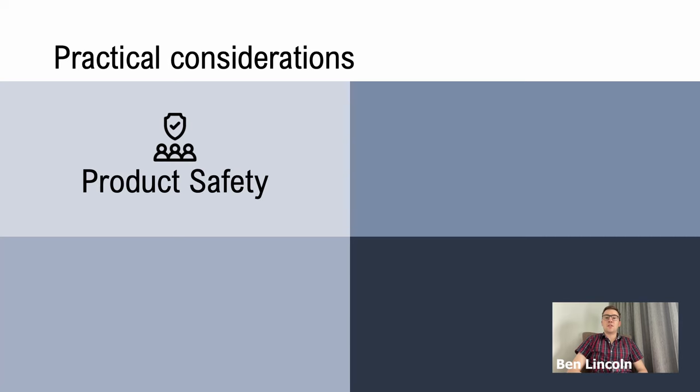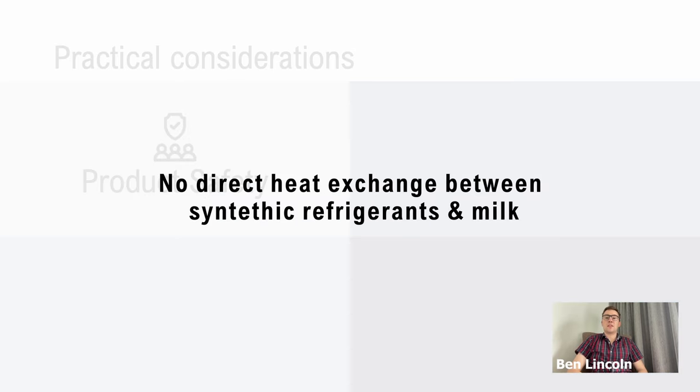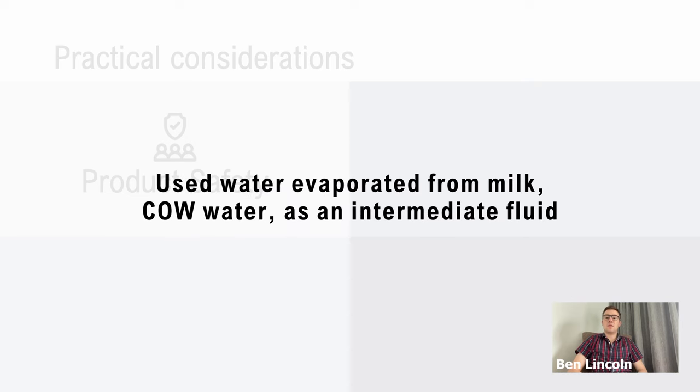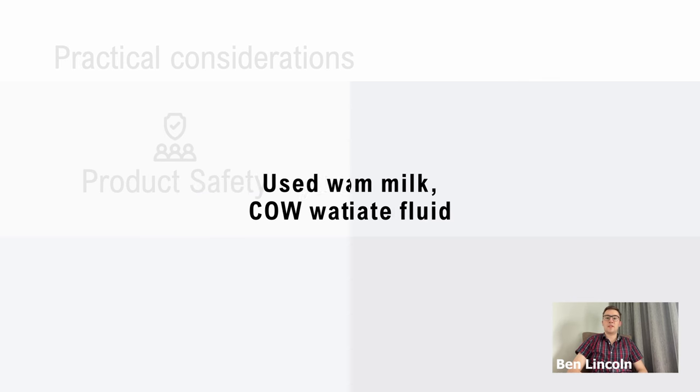For product safety, the process had no direct heat exchange between synthetic refrigerants and processed milk. Instead, the team used some of the water that was evaporated from the milk, called cow water, as an intermediate fluid.